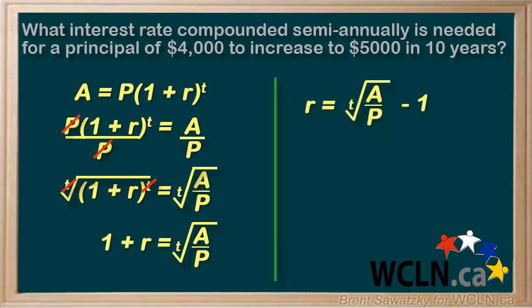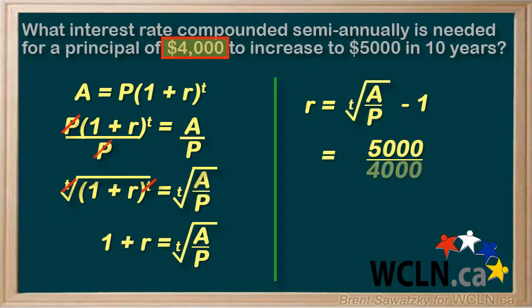Now it's time to plug in some numbers. We have 5,000 for the amount and 4,000 for the principal. The number of compounding periods would be 10 years times 2, because it's semi-annual — so that would be 20. And we're subtracting 1.